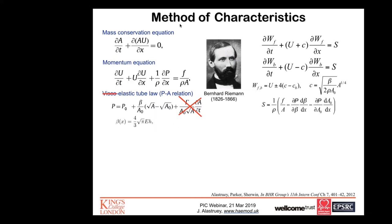Using Riemann's method of characteristics — a mathematical analysis — we can show the existence of pulse waves propagating from the heart to the periphery in the forward direction, and pulse waves propagating in the opposite direction, going from the periphery back to the heart.